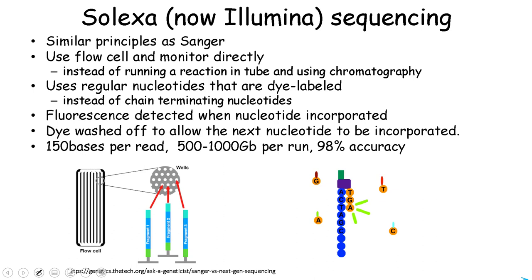Illumina sequencing uses the same sequencing by synthesis strategy as Sanger. The main difference is that a flow cell is used where millions of DNA fragments are immobilized. The fluorescence signals produced by the incorporated nucleotides are detected directly in real time, so there is no need to do size separation of fragments using chromatography. Instead of chain-terminating nucleotides, Illumina uses regular nucleotides that are dye-labeled — the dye prevents another nucleotide from being added. After a nucleotide is added and the fluorescence is measured, the dye is washed off and the next nucleotide is incorporated. Illumina sequencing produces reads about 150 bases long but can read billions of fragments in each run, producing close to one terabase of sequences per run with 98% accuracy.